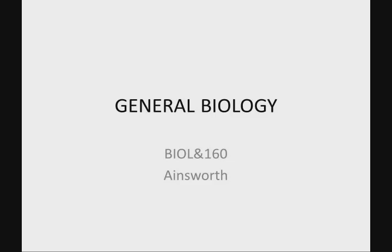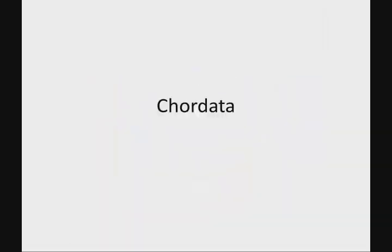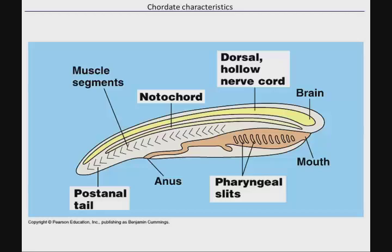Now let's look at our final phylum of the nine representative phyla in the animal kingdom: chordata. This is the one that we're in. All chordates are going to have some characteristics that are common, and we call these hallmarks.